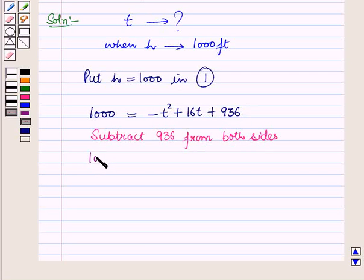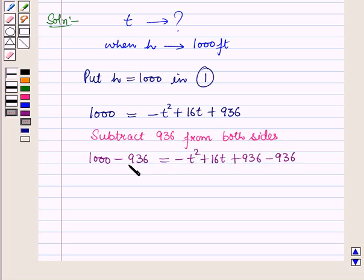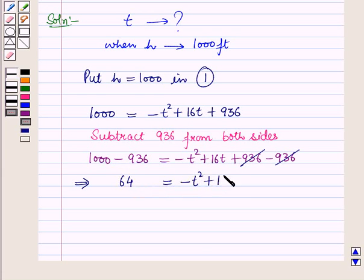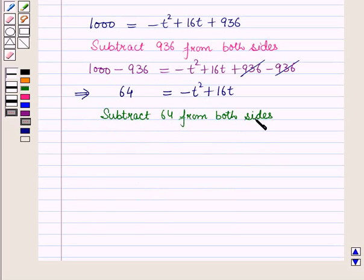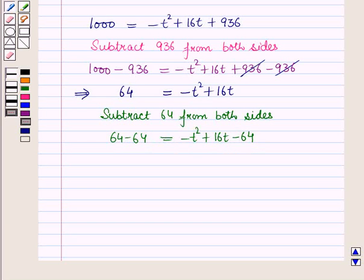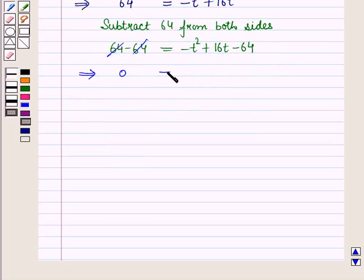Now let us subtract 936 from both sides. So this would be 1000 - 936 = -t² + 16t + 936 - 936, which simplifies to 64 = -t² + 16t. Now subtract 64 from both sides of this equation. So it will be 64 - 64 = -t² + 16t - 64, which further implies 0 = -t² + 16t - 64.